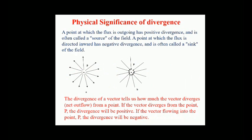Next, the physical significance of divergence. As the name indicates, the divergence of a vector tells us how much the vector diverges from a point. If the vector diverges from the point P, the divergence will be positive. If the vector flows into the point P, then the divergence will be negative. Divergence is a local measure of its outgoingness — the extent to which there is more of the field vectors exiting a small region of space than entering it. A point at which the flux is outgoing has positive divergence.